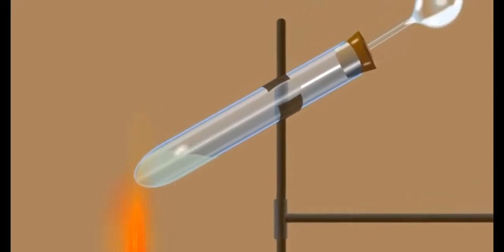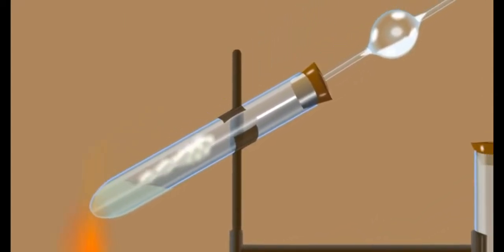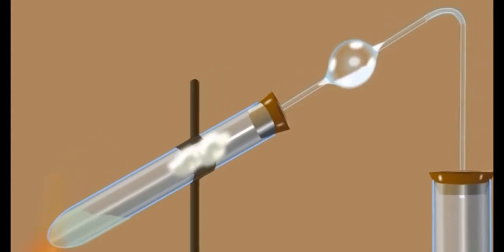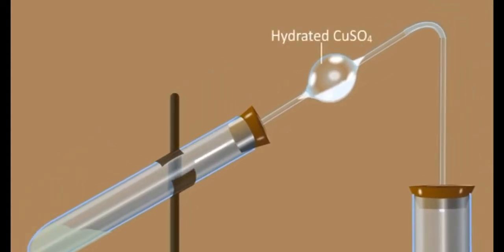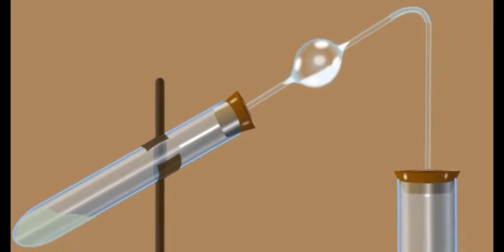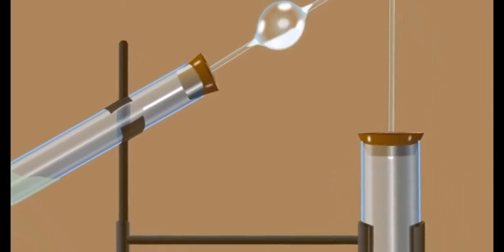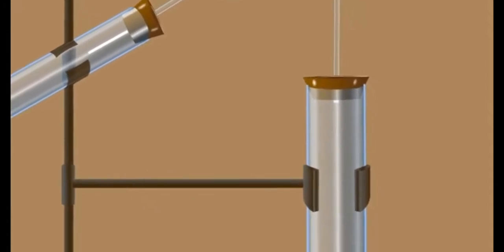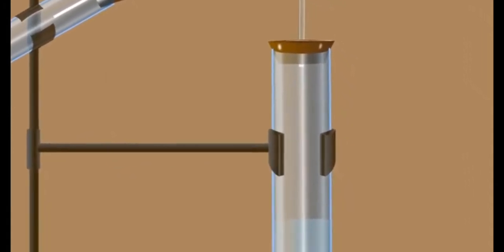The mixture is heated in a well-dried hard glass tube provided with a delivery tube having a bulb in the center. The other end of the delivery tube is dipped in a tube containing lime water. The bulb in the delivery tube is packed with glass wool containing anhydrous copper sulfate.